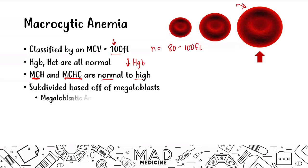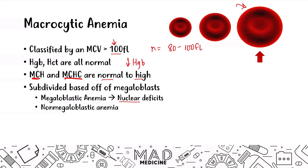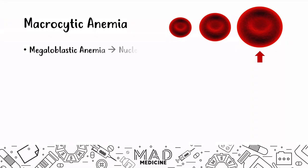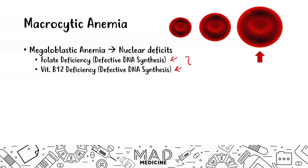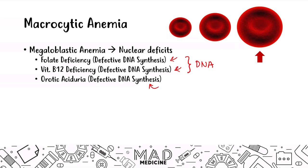Macrocytic anemias can be subdivided based off of megaloblasts. If you have megaloblastic anemia, it's because of nuclear deficits. If you have non-megaloblastic anemia, it's not because of nuclear deficits — something else. Megaloblastic anemias, aka nuclear deficits, can be caused by folate deficiencies or vitamin B12 deficiencies. Both of these deficiencies are going to lead to a defect in DNA synthesis. You can also have something called orotic aciduria, which can also lead to defective DNA synthesis.